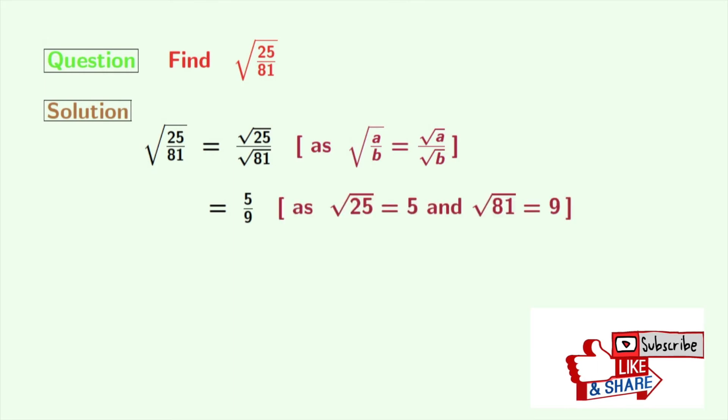Now as root over 25 is 5 and root over 81 is 9, we get 5 by 9.